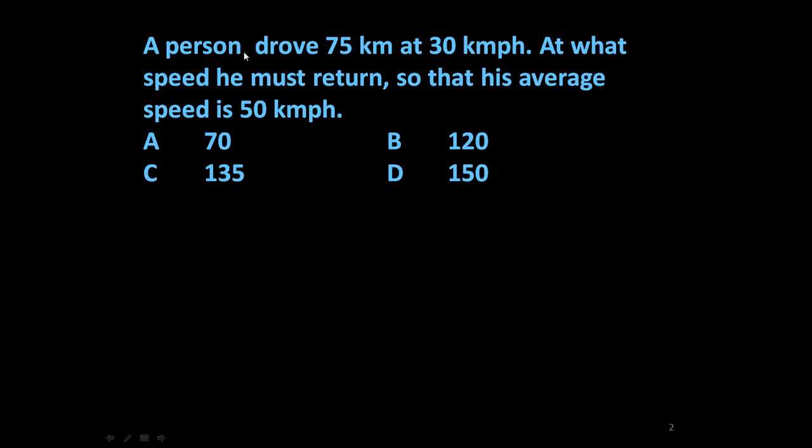The given problem is: a person drove 75 km at 30 km per hour. At what speed must he return so that his average speed is 50 km per hour?